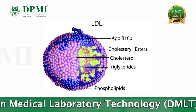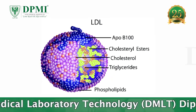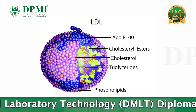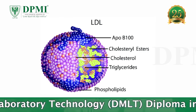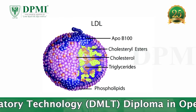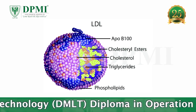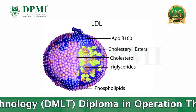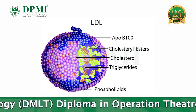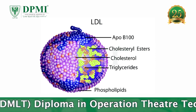Low Density Lipoprotein (LDL): These particles are derived from VLDL and IDL particles and they are enriched in cholesterol. LDL carries the majority of cholesterol in the circulation. It contains apolipoprotein B100.